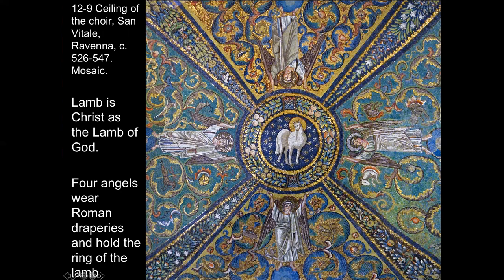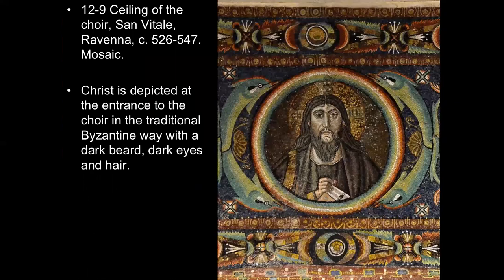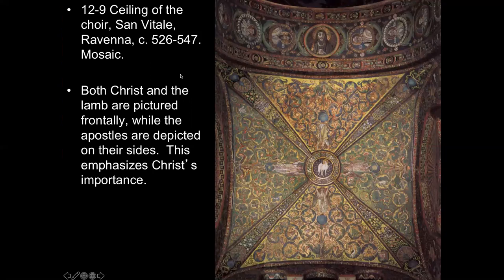This is Christ as the Lamb of God — the sacrifice of God for salvation for all Christians. Four angels wear Roman draperies and hold the ring of the lamb with all the fruit and vines, imagery we've seen used before in Christian art. Getting a close-up of Jesus: he has a long face, is a little older, has dark eyes. This is still common in what's called the Eastern or Orthodox Church — Greek Orthodox or Russian Orthodox — though it doesn't represent what Jesus actually looked like, but what holy people at the time the image was made looked like.